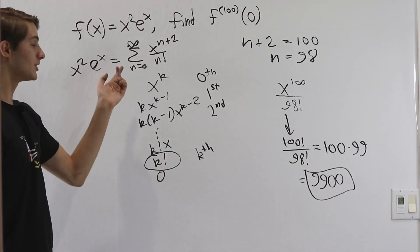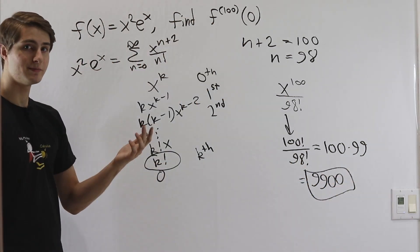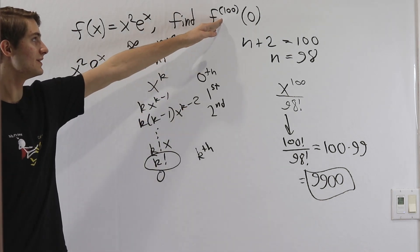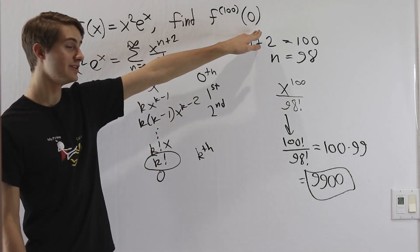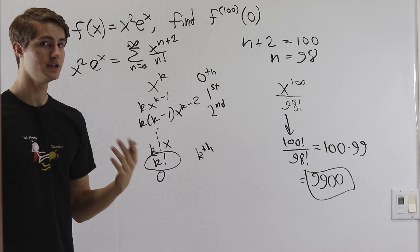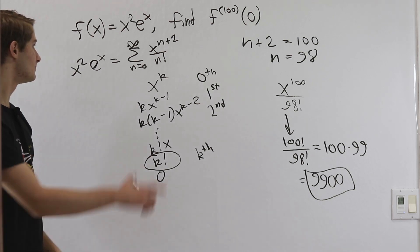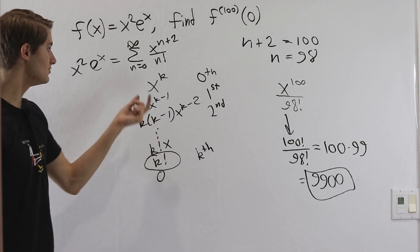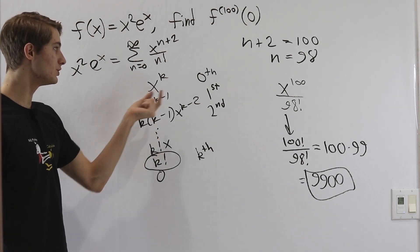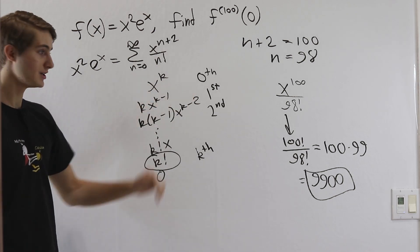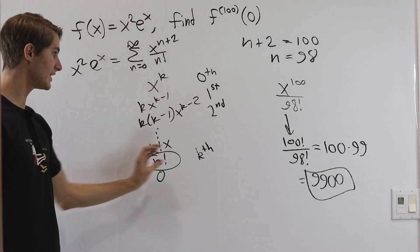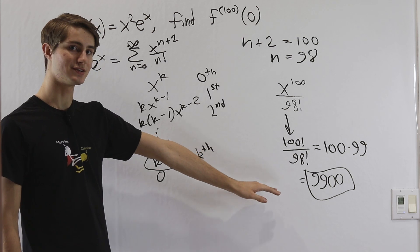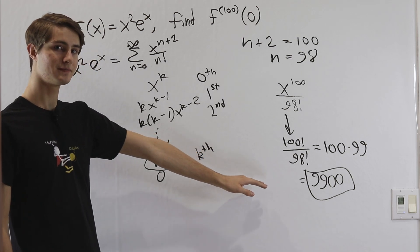The thing to remember from this problem is that derivatives — especially very high-order derivatives evaluated at zero — are often a good time to use Taylor series, because polynomials evaluated at zero will vanish, letting us isolate the single term we need to get our answer.